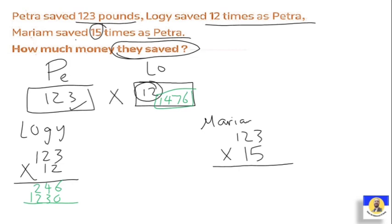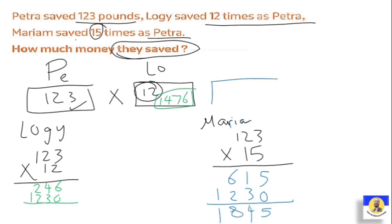Now for Maryam — 123 by 15: 5×3=15, write 5 carry 1; 5×2=10 plus 1=11, write 1 carry 1; 5×1=5 plus 1=6. Then put 0; 1×3=3; 1×2=2; 1×1=1. Then plus: 5 plus 0=5, 6 plus 3, giving us the answer: 8 and 4 and 1. So Maryam has 1,845.